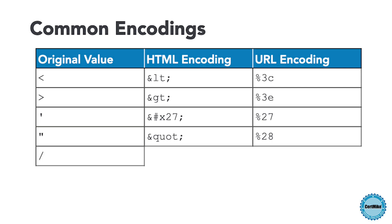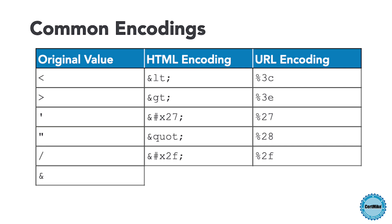The forward slash used in URLs is HTML encoded as &#x2F; and URL encoded as %2F. And we also need to encode the ampersand itself, because it otherwise indicates HTML encoding. We HTML encode the ampersand as &amp; and URL encoded as %26.